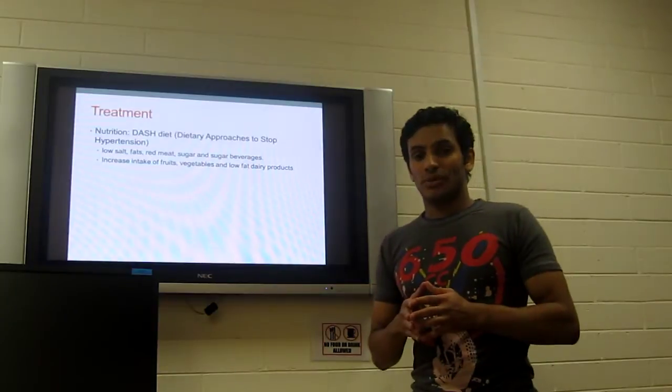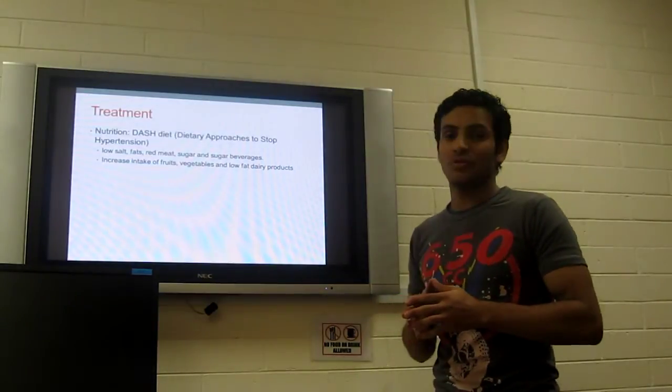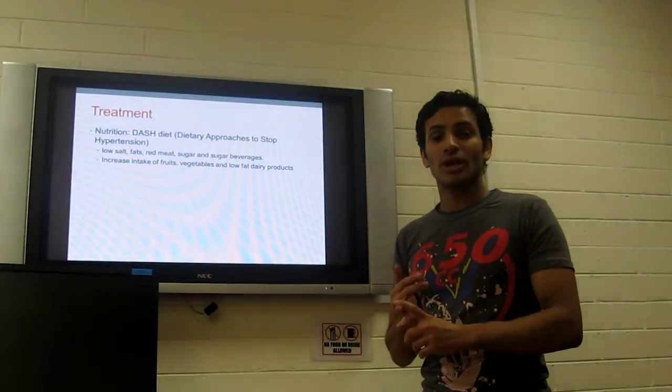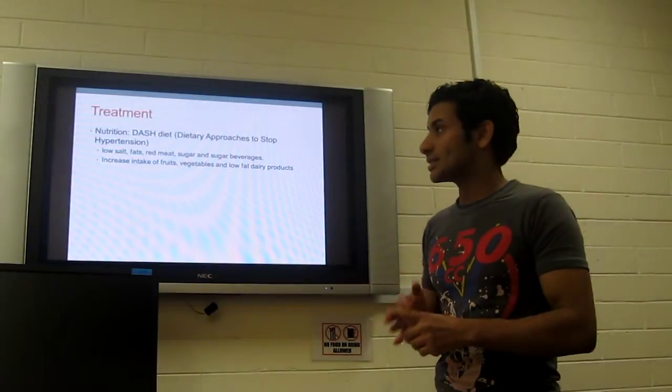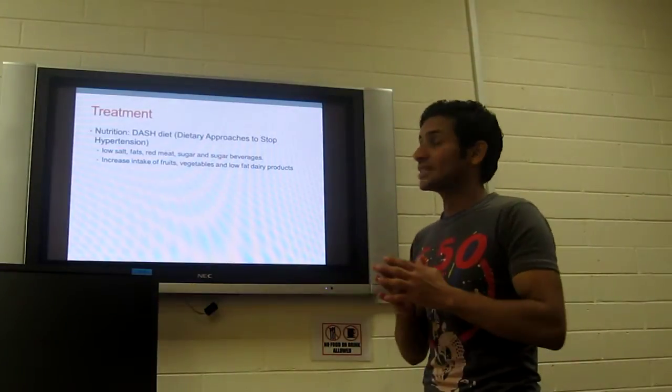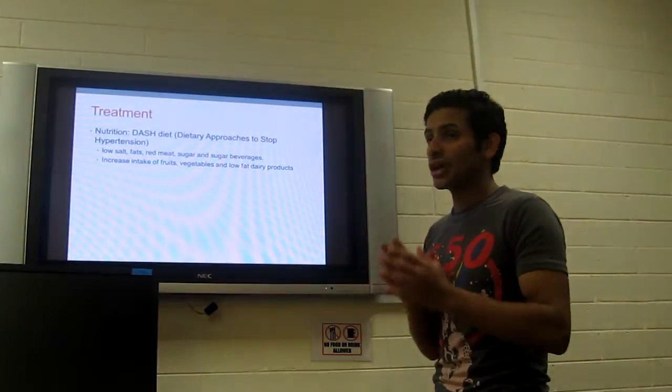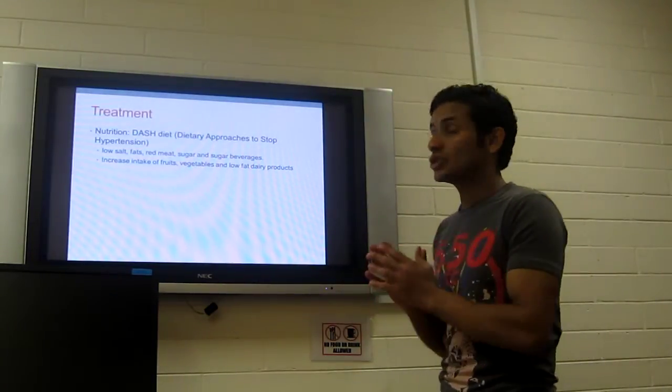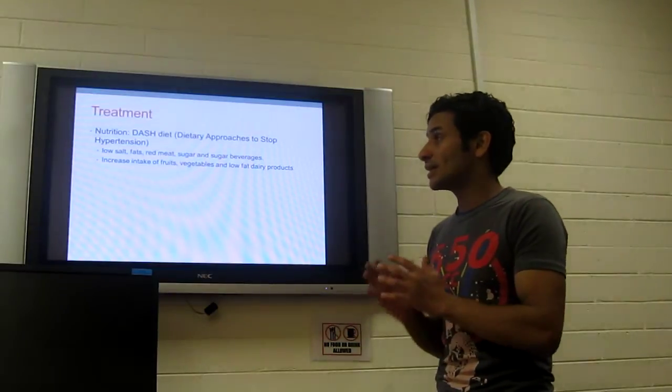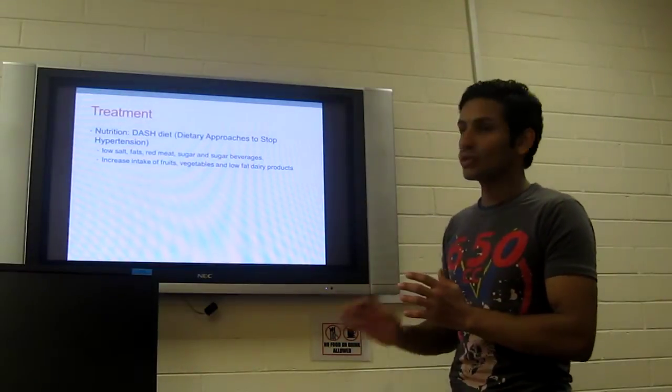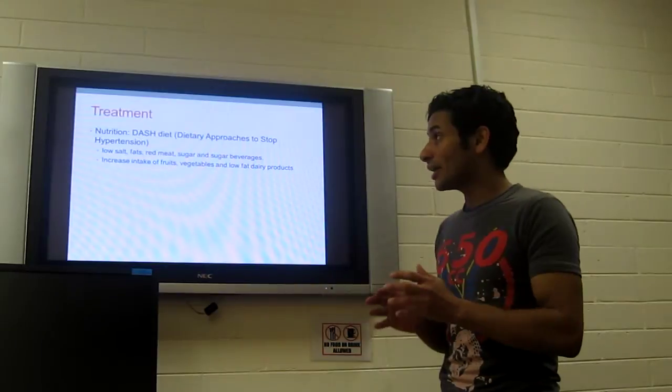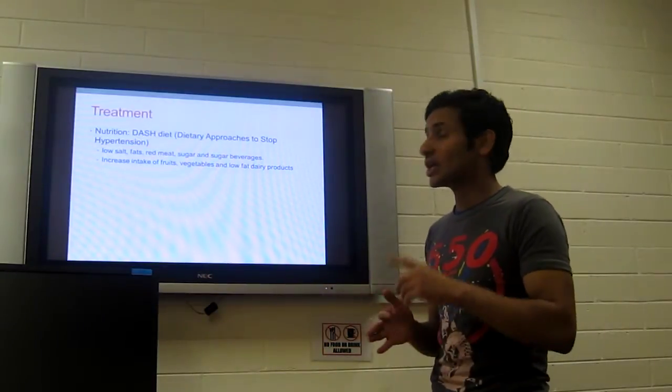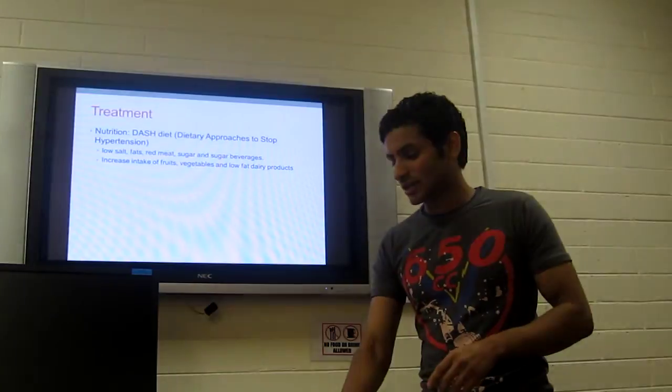What are the treatments? There are three types of treatments: nutrition, drugs, and exercise. In nutrition, there's a diet called DASH diet, which means dietary approaches to stop hypertension. This diet is low in salt, fat, red meat, sugar and sugar beverages, and high in fruits, vegetables, and low-fat dairy products.